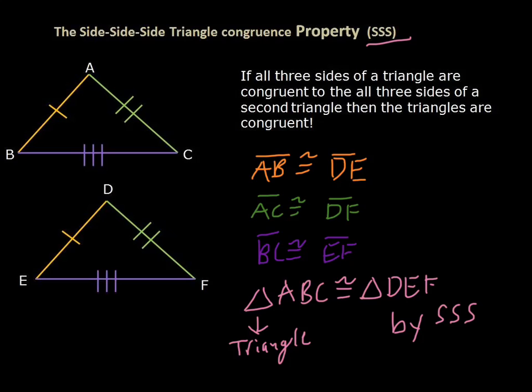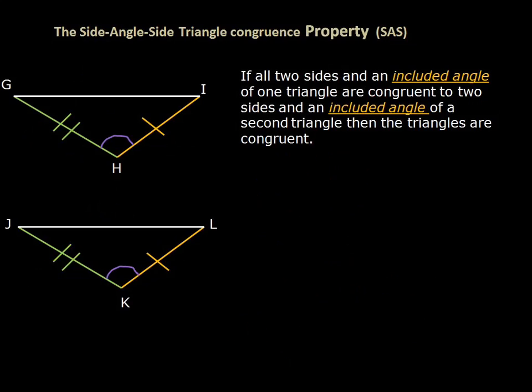The next one is the Side-Angle-Side congruence property, also called SAS. It says that if two sides and an included angle of one triangle are congruent to two sides and an included angle of a second triangle, then the triangles are congruent. An included angle is sandwiched between two sides.